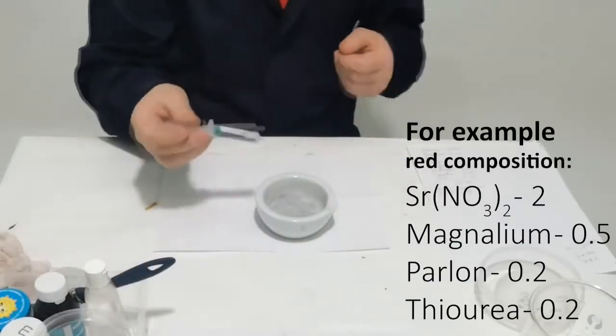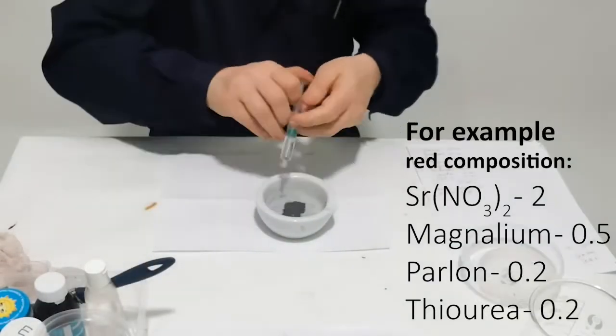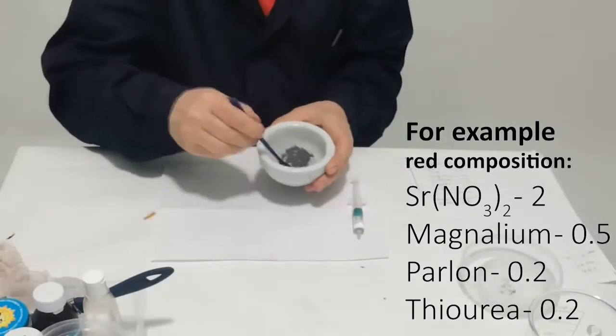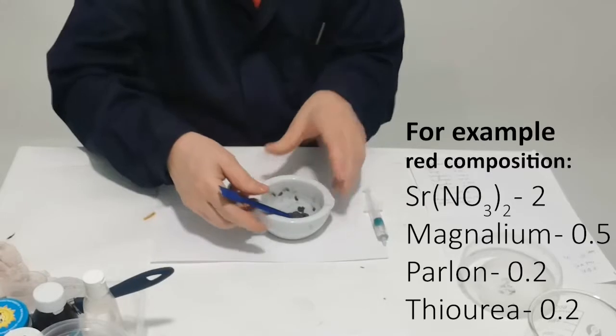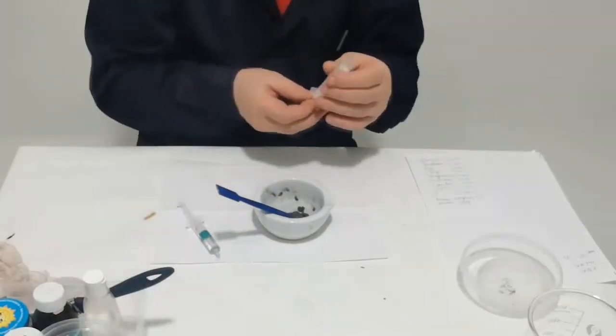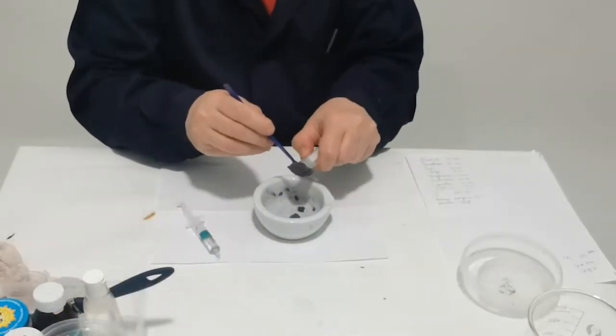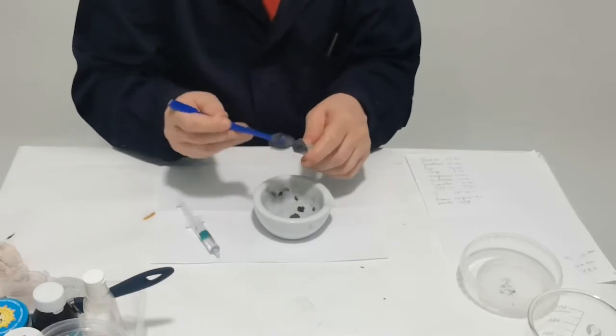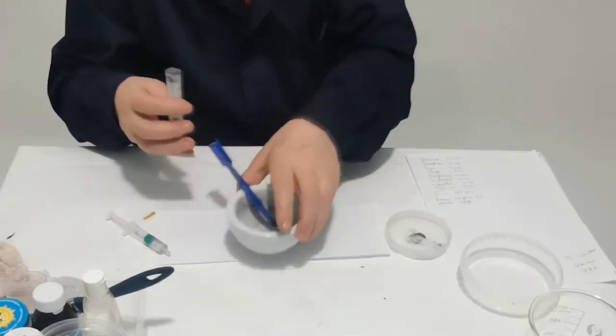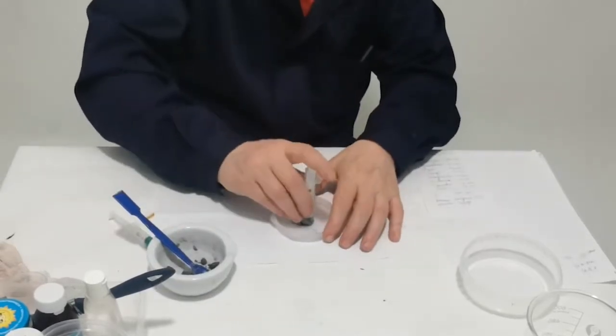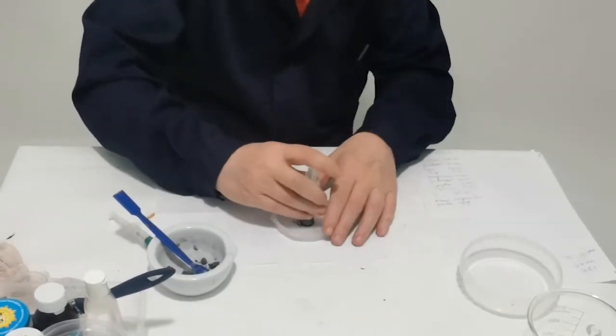I will show you how to make a star that includes a binder, for example Parlon or CPVC. Most of the stars of colored fire are just like that. Then only solvent is enough for us. Pour acetone into the mixture, mix, and fill the syringe with the cutoff head. Squeeze out the resulting mass from the syringe.